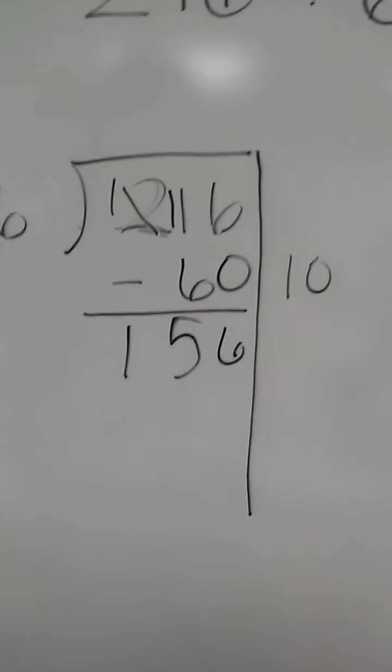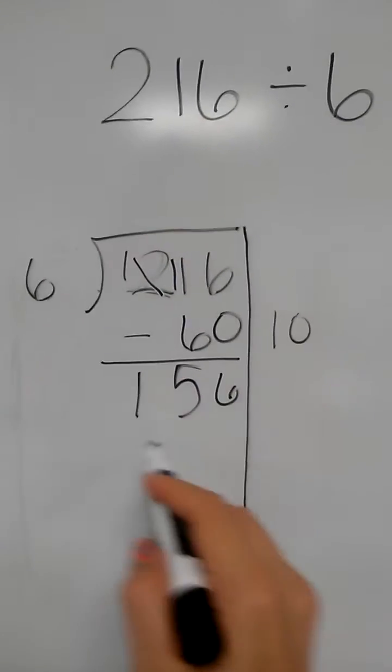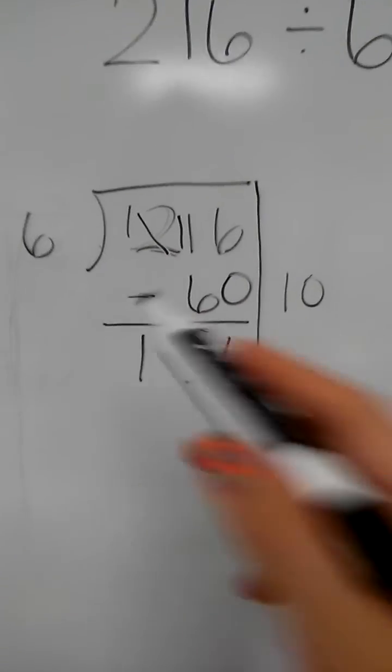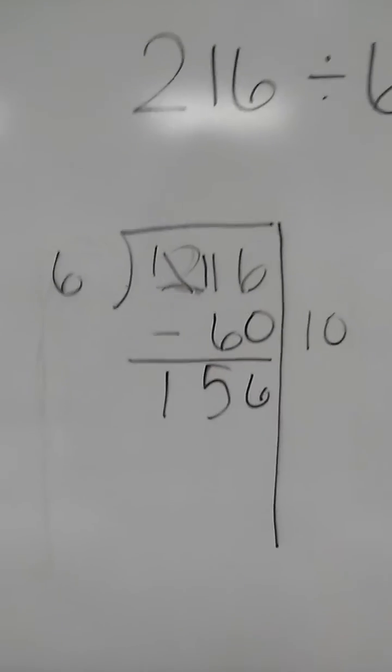Now usually I encourage students to start thinking about facts and multiples and things that they know they can work with that are going to get them close to this number. Some kids are going to keep doing 6 times 10 and subtracting and that's fine, it's going to give them the right answer. We want to eventually move them towards choosing numbers that are going to be more efficient.